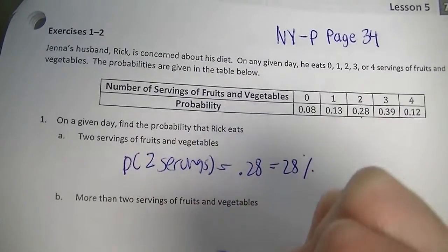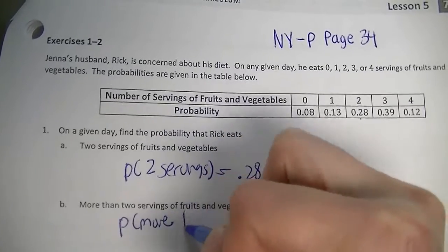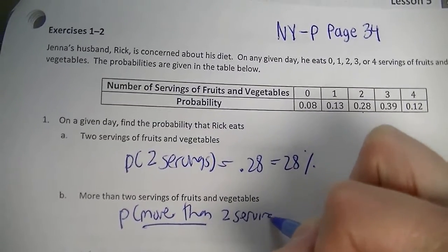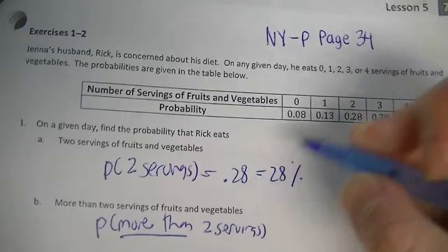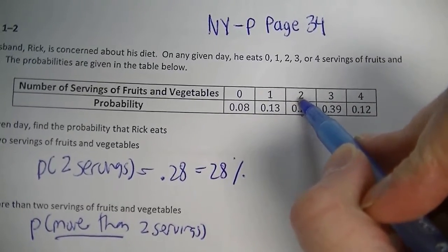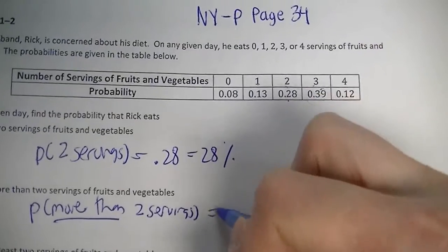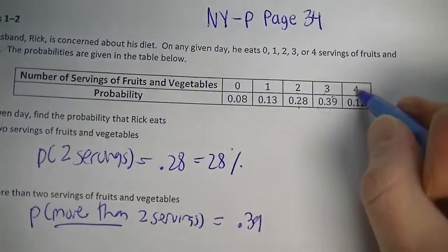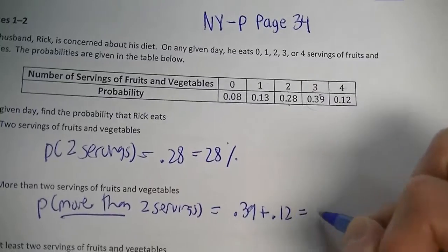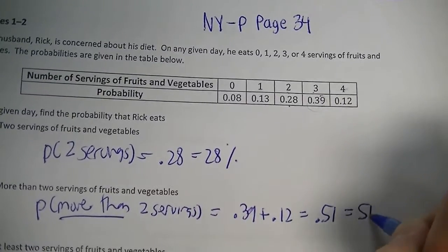More than two servings of fruits and vegetables. We check each value: zero, one, and two servings are not more than two, so we skip those. Three servings — yes, that's more than two, so thirty-nine hundredths. Four servings — yes, more than two, so plus twelve hundredths. That gives us fifty-one hundredths, which is fifty-one percent.